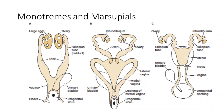Notice too that in monotremes the ovaries are very large and they produce relatively large eggs. The echidnas and the duck-billed platypuses produce large, leathery eggs — not cleidoic eggs with hard shells, but large leathery ones.